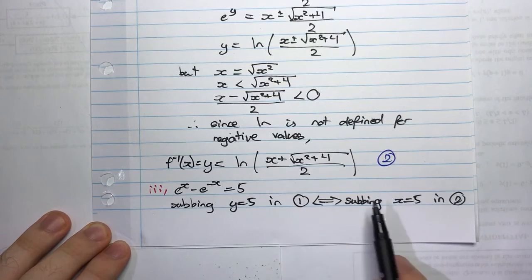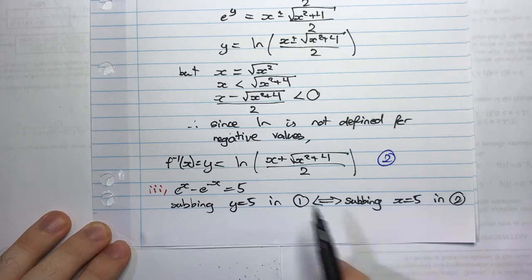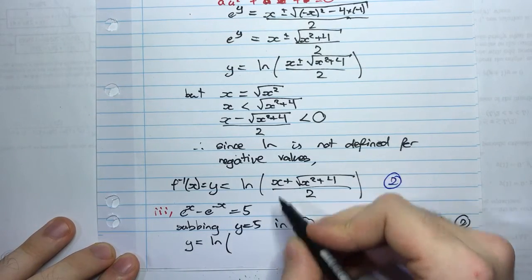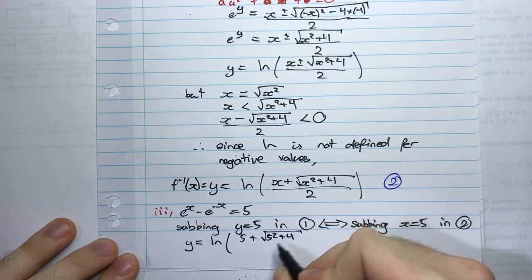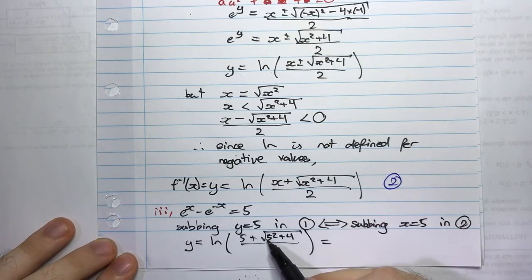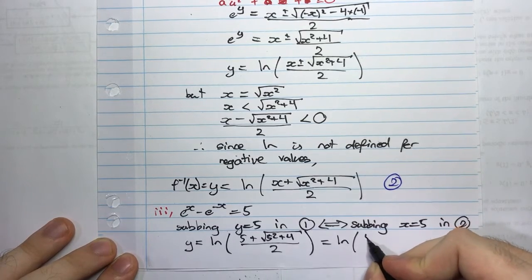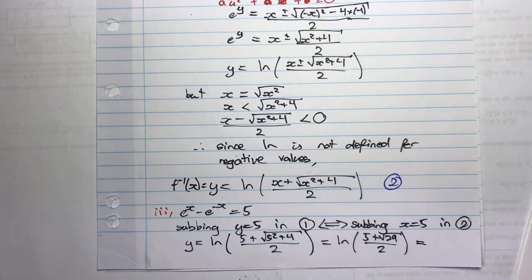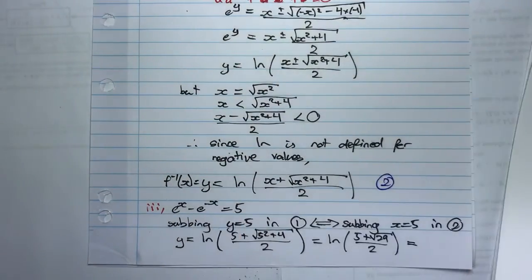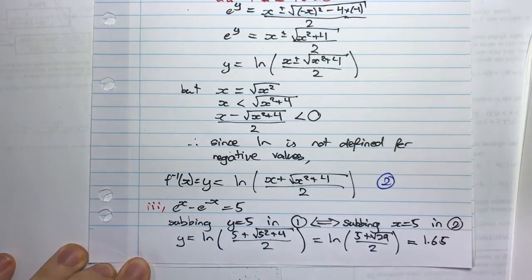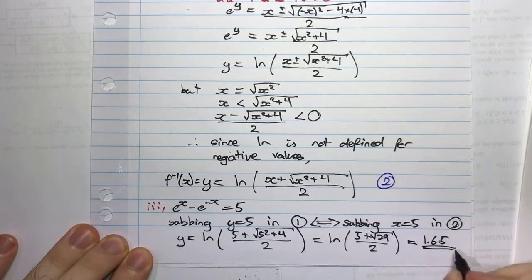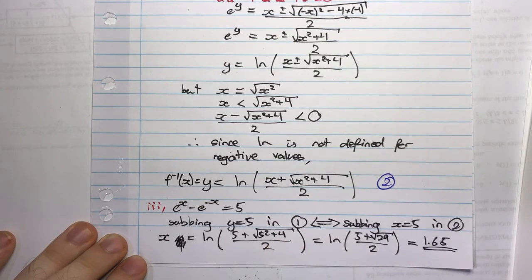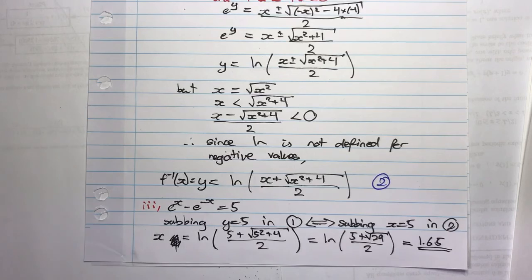So substituting x = 5 into the inverse function gives y = ln([5 + √(5² + 4)] / 2) = ln([5 + √29] / 2). Putting that into the calculator gives approximately 1.65, rounded to two decimal places as the question asked. So x ≈ 1.65 is the solution to e^x − e^(−x) = 5.